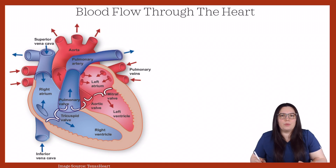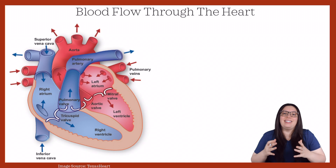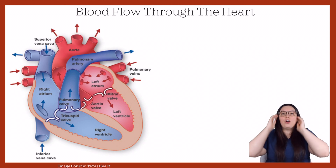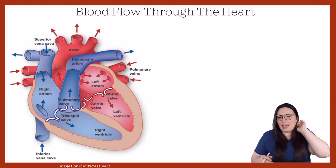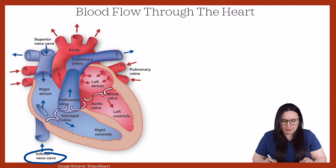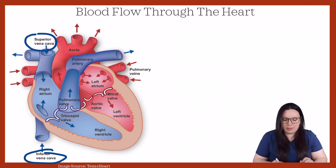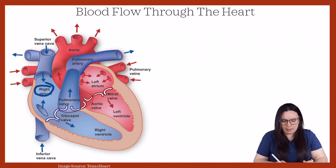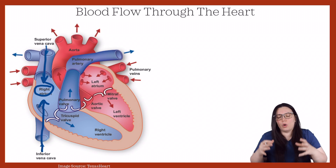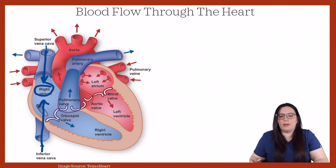For all intents and purposes, we're going to begin by talking about how deoxygenated blood gets back to the heart first. As we take a look over here, we have our heart and we have two huge veins that are coming into the right atrium — the inferior vena cava and the superior vena cava. Those two veins bring blood back into our right atrium. You can see the little arrows — all that blood gets dumped into that right atrium and it returns.